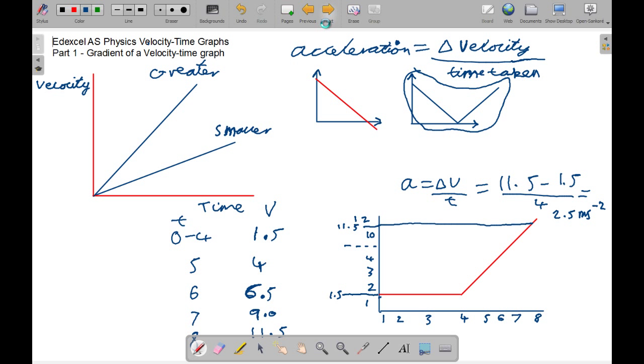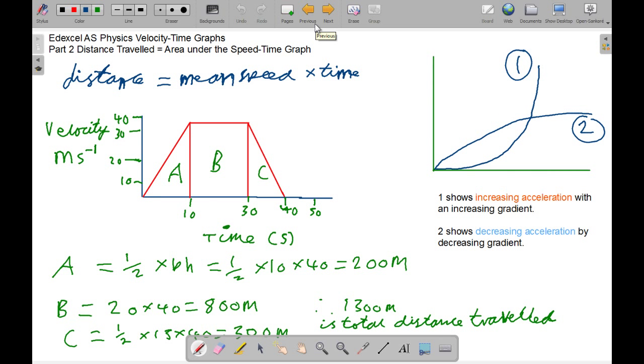So now we'll move on to the next part. We've got distance traveled equals the area under the speed-time graph. So distance equals mean speed times time. And if you have velocity against time, then we can split it into three sections: A, B, and C - two triangles and a rectangle. So to find A, we use half times base times height. So half times 10 times 40 is 200. B is 20 times 40, or length times width, and that makes 800. And C, we do the same thing again with A - half times 15 times 40 is 300. Add it all up is 1,300 meters, so the total distance traveled.